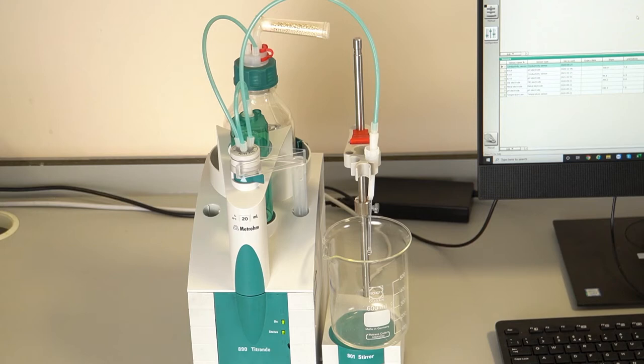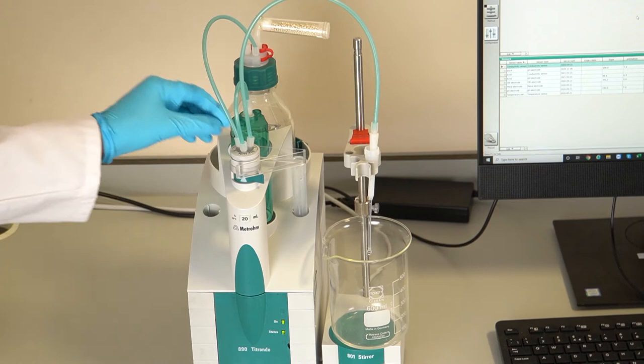Mount a waste beaker on the titration stand and ensure the buret tip is pointing into the beaker. Disconnect the reagent bottle from the buret.